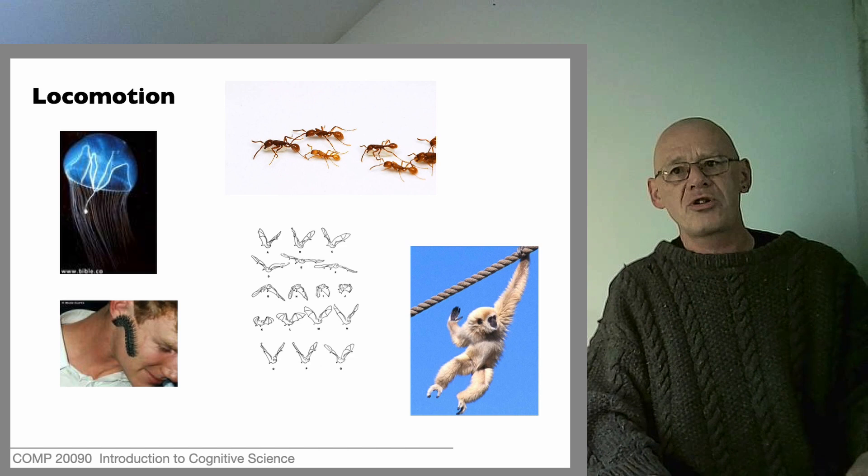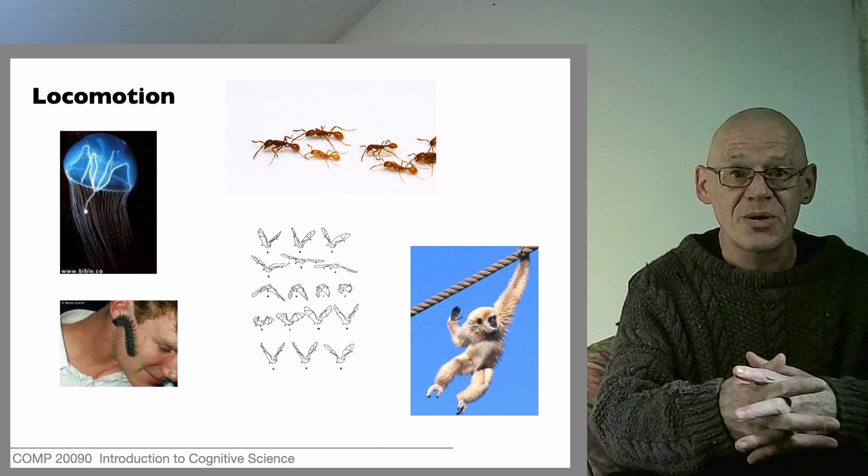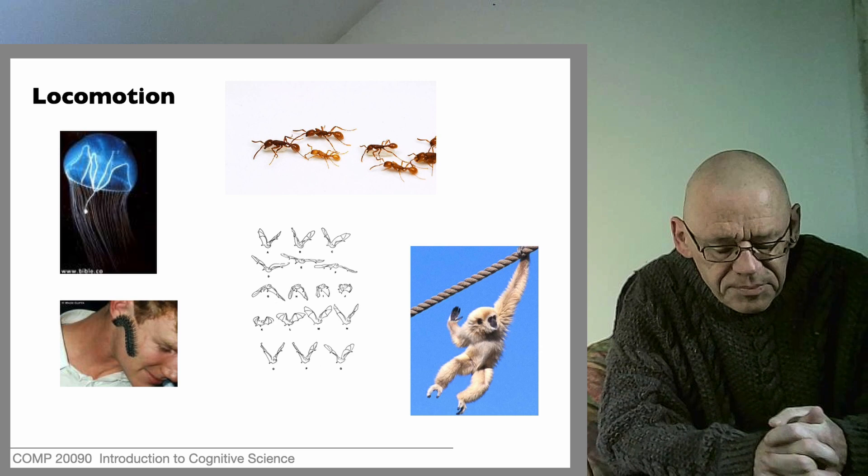Clearly there's purpose in getting around. Evolution tends to come up with good solutions. Why do we not see animals with wheels? Did that question ever occur to you before? If evolution is so good at this, how come we don't all have wheels? Wheels are really great for getting around.